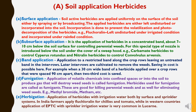The fourth method is fumigation — the application of volatile chemicals into confined spaces or into the soil to produce gas that will destroy weed seeds. Herbicides used for fumigation are called fumigants. These are good for killing perennial weeds as well as for eliminating weed seeds. Examples include methyl bromide and methane, etc.